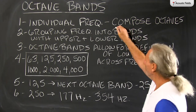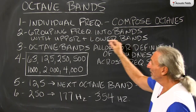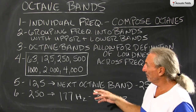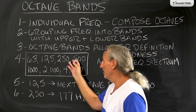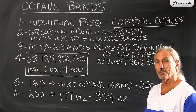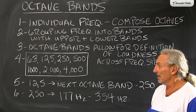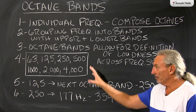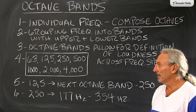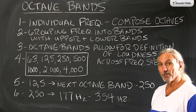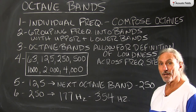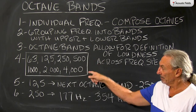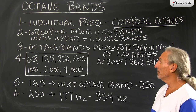Octave bands are composed of individual frequencies. We have our standard groupings: 63, 125, 250, 500 — those are the standard octave bands that we see. A lot of our test results are based upon those particular octave bands, and a lot of your sound transmission ratings, STC ratings on materials and barriers, are based on just those particular groupings.